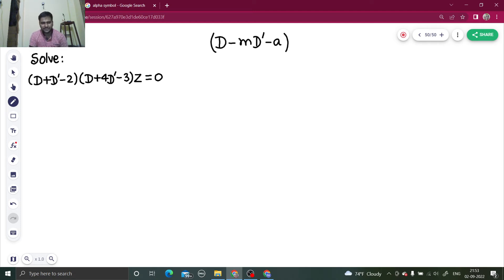If I compare the first factor with this, coefficient of d' is 1. I have to compare that with minus m. Let us say m1 because two brackets are there, so two values of m will come. M1 is minus 1 comparing minus m with 1. And what about a1? A1 here is 2 because minus 2 you will compare with minus a.